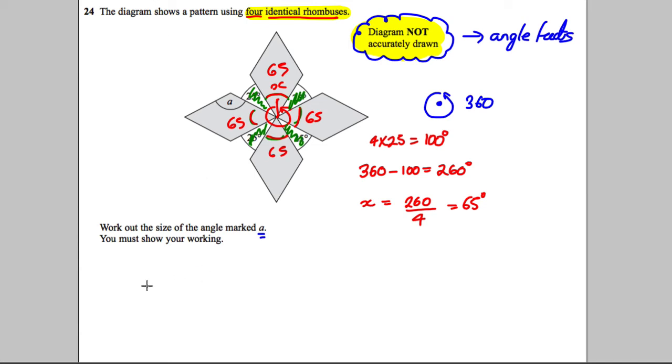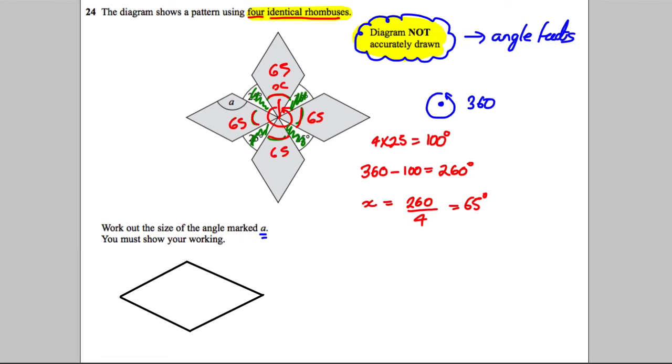Now let's use some more logic. Let's draw the rhombus that we've got in each one, so there's our rhombus like that. It's four identical rhombuses we're told. This is angle a that we're supposed to find.